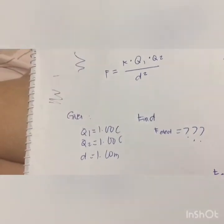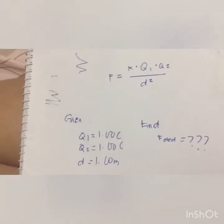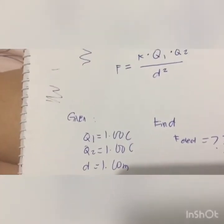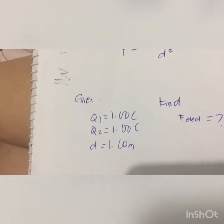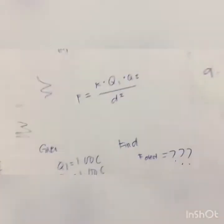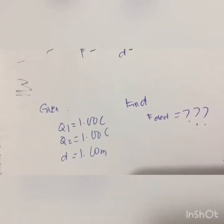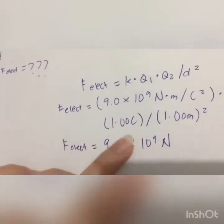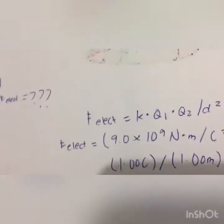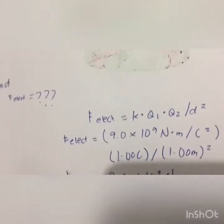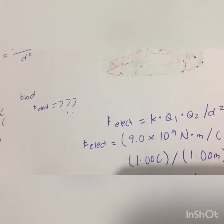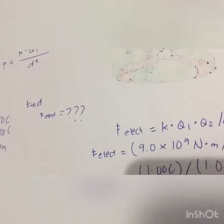The first step of the strategy is the identification and listing of known information in variable form — here we know the charges Q1 and Q2 and the separation distance d. The next step involves listing the unknown information — in this case, the force F is the unknown quantity. The result of the first two steps is shown in my notebook. The final step involves substituting the known values into Coulomb's Law equation and using proper algebra to solve for the unknown. The force of repulsion between two +1.00 Coulomb charges held 1.00 m apart is 9 billion Newtons — an incredibly large force, comparable to the weight of more than 2,000 jetliners.